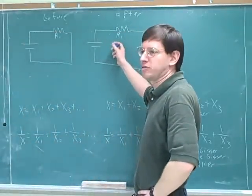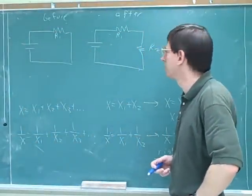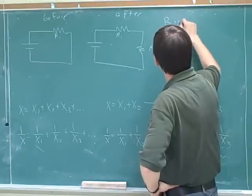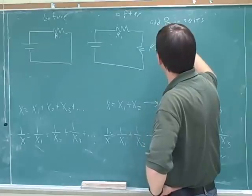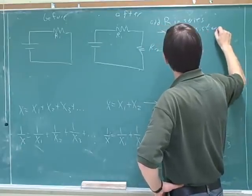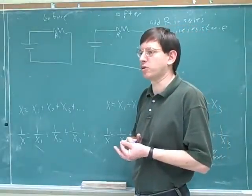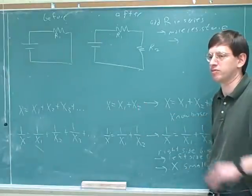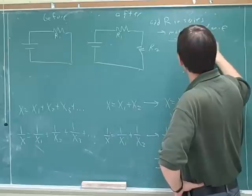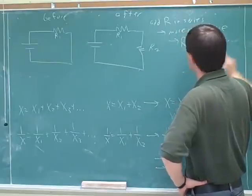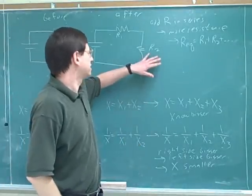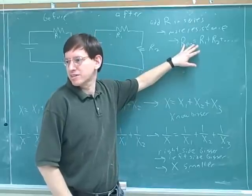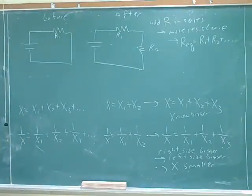Would this circuit have more or less resistance than before? Adding this new resistor adds more resistance. If we add a resistor in series, we get more resistance — adding a new resistor in series increases the total resistance. Which of our equations should we use? Adding a new device makes x bigger, so we want the sum formula. That tells us the equivalent resistance is the sum of the individual resistances. The more resistors you put in series, the greater the total resistance — that's common sense.